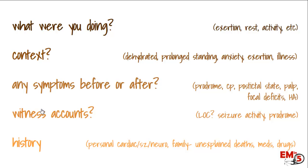Ask about a prodrome — that can be very helpful. Ask any witnesses whether the patient had a long period of shaking or a postictal state. Getting that witness account is really helpful because the patient often doesn't remember what happened. Also always ask about personal or family cardiac history, and especially in younger patients, ask if there are any unexplained deaths in the family at a young age, which would be concerning for hypertrophic cardiomyopathy.